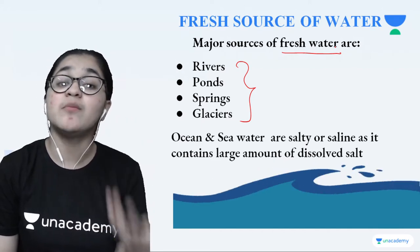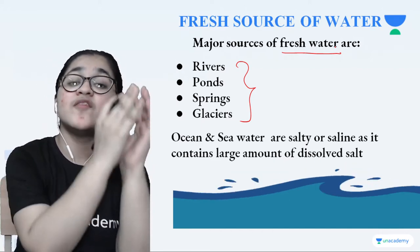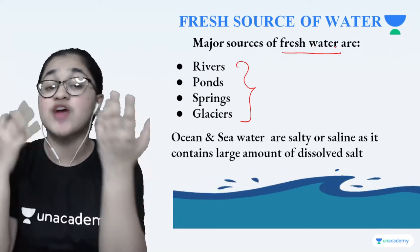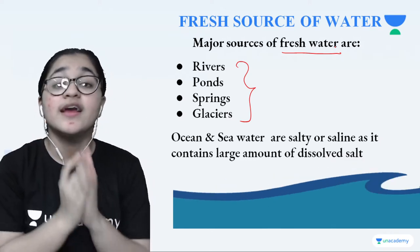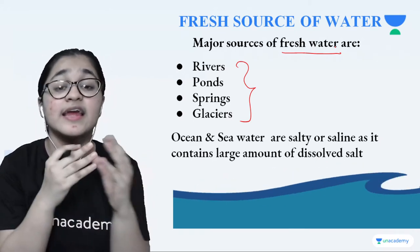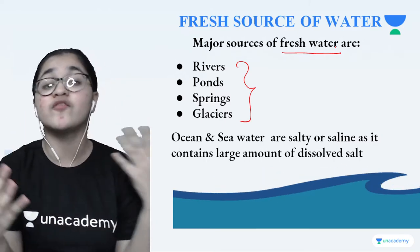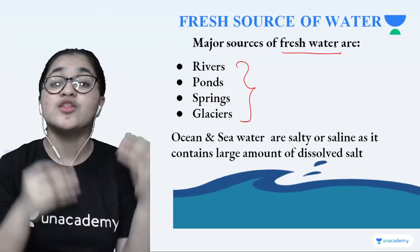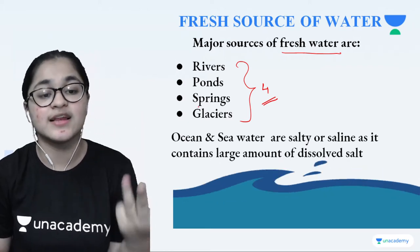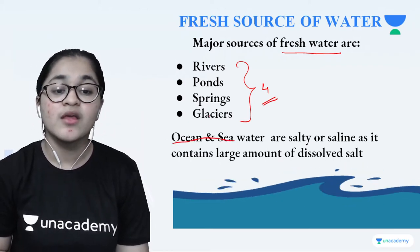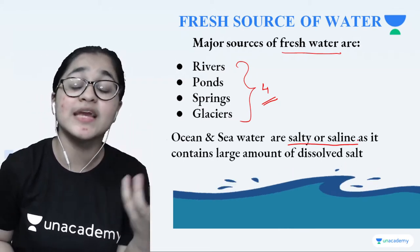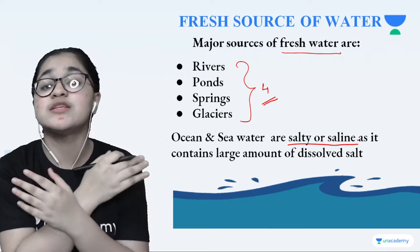Ocean and sea water is very salty, so we cannot consider it a fresh source of water. Fresh water is the water we can consume and drink — the water that comes to our homes. The fresh sources of water are rivers, ponds, springs, and glaciers. Ocean and sea water we cannot consume because it is very salty and saline, so we cannot drink it.